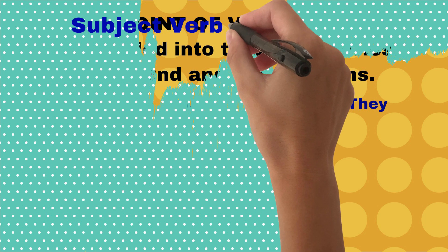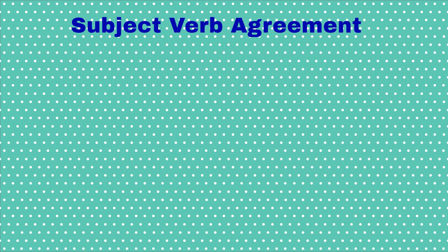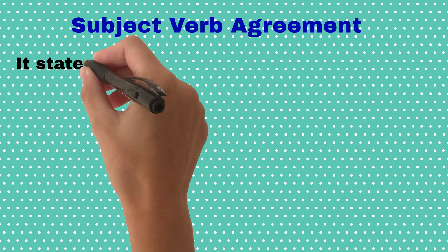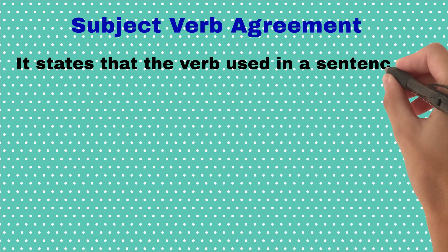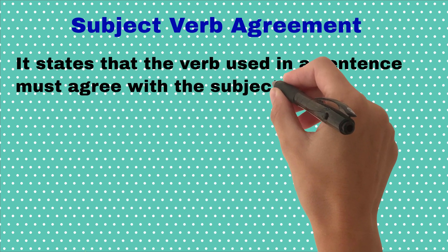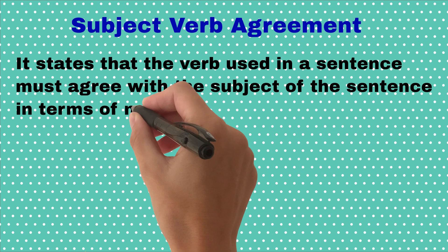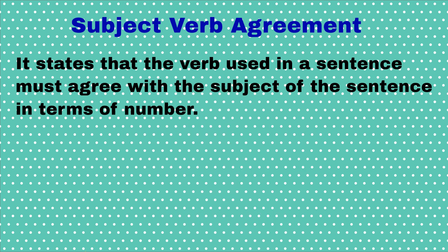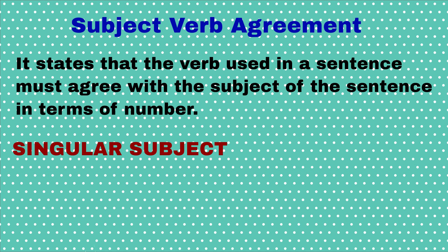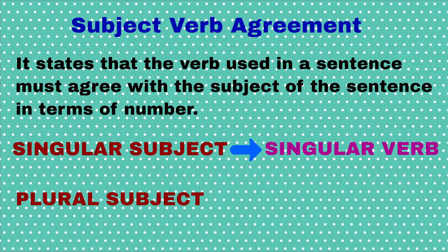After building a background, let's come towards today's topic: subject-verb agreement. Subject-verb agreement is a grammatical rule which states that the verb used in a sentence must agree with the subject of the sentence in terms of number. In other words, if the subject is singular, the verb must also be singular, and if the subject is plural, the verb must also be plural.